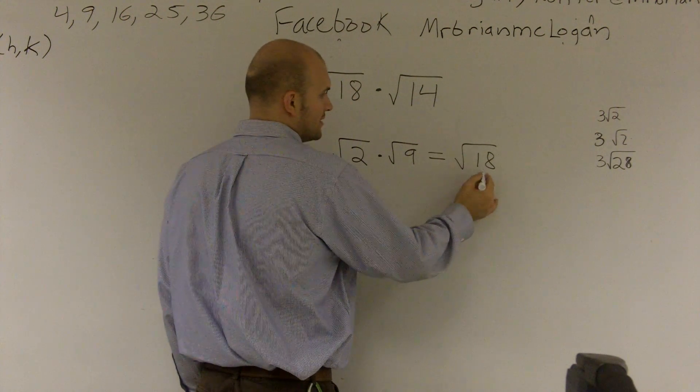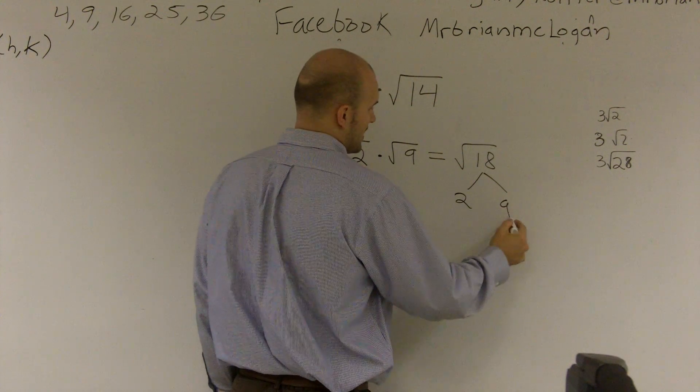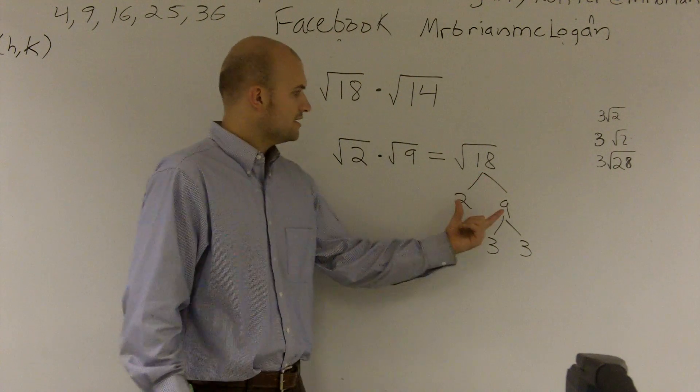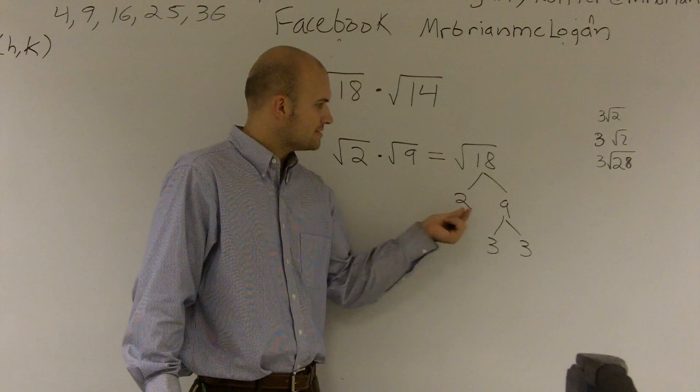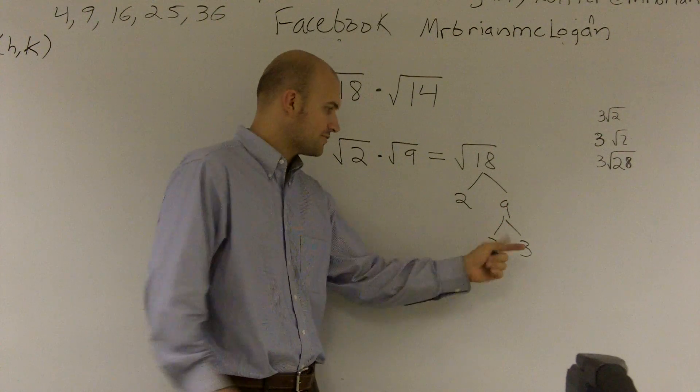First way, I'll do the factoring way. Two, nine, three times three. So you factor it. Two times nine multiplied to give you 18. So you factor this. You can't factor two anymore. Then you can factor nine to three and a three.